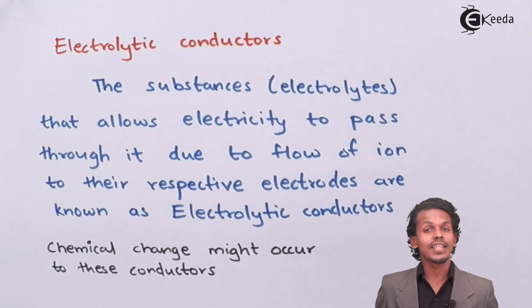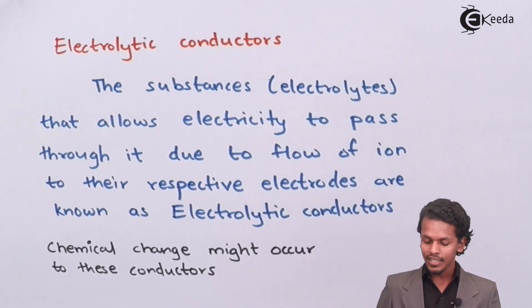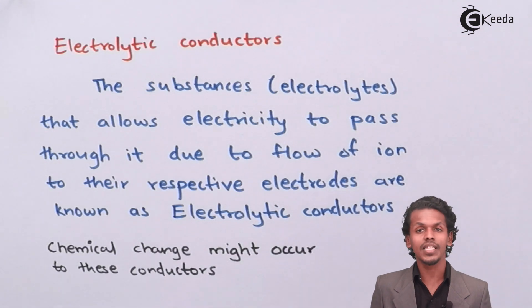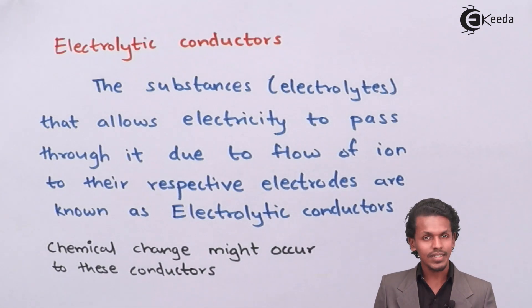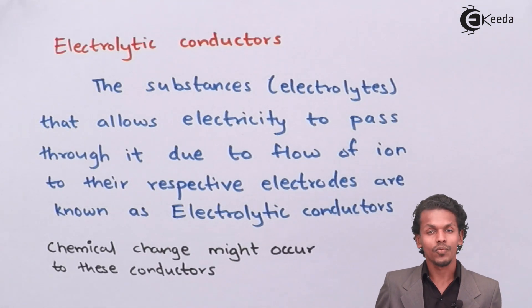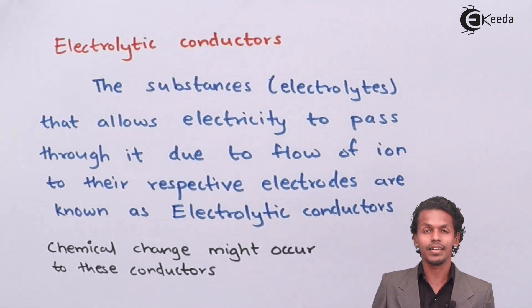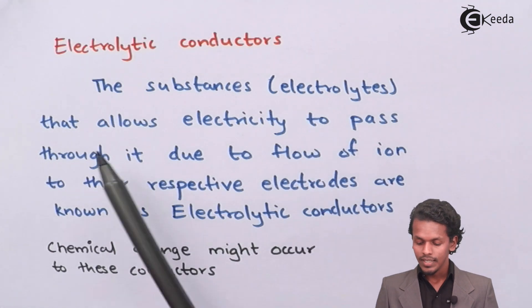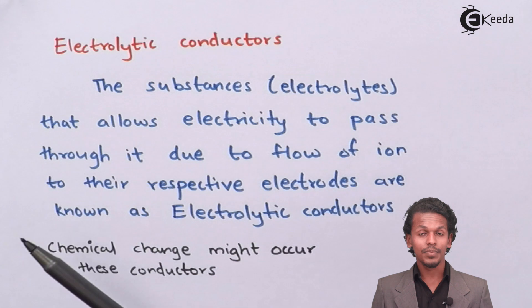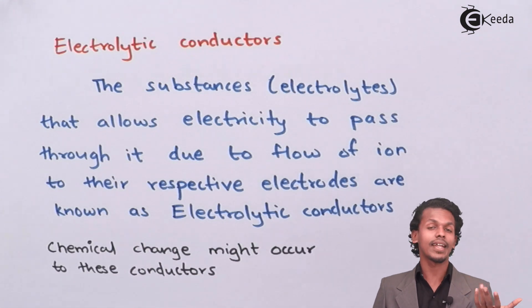The next is electrolytic conductor. The substance, usually electrolytes - and electrolytes are those substances which are salts that consist of cations as well as anions - when they are dipped in aqueous form or mixed in water to form an aqueous solution, they conduct electricity. They allow electricity to pass through it due to flow of ions.